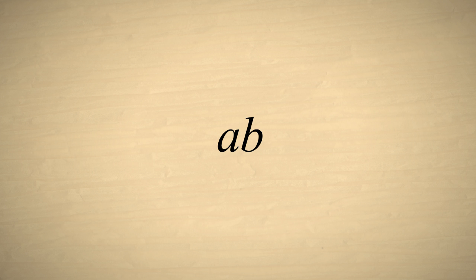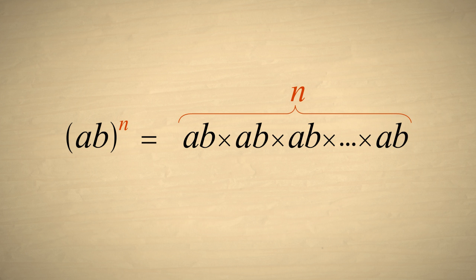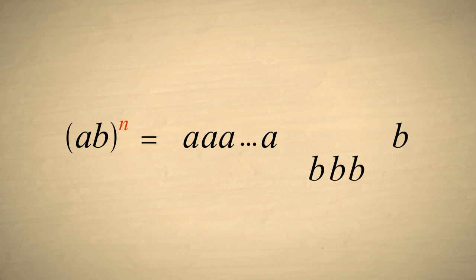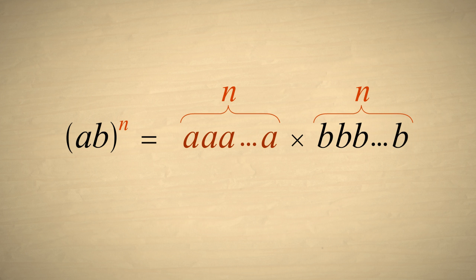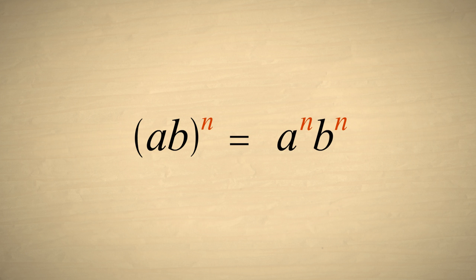Let's start with a simple expression containing two terms, a and b, multiplied together, and raise this expression to some power n. As we saw, this is equivalent to n copies of the expression multiplied together. Since all the a's and b's are multiplied, and multiplication is commutative, we can rearrange the a's and b's any way we like. If we group all the a's and all the b's, we have n a's multiplied together times n b's multiplied together. The n a's multiplied together can be written as a to the nth power, and the n b's can be written as b to the nth power. So this expression is equivalent to a to the nth power times b to the nth power.